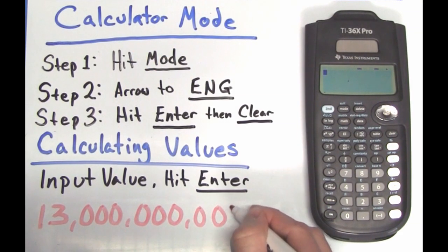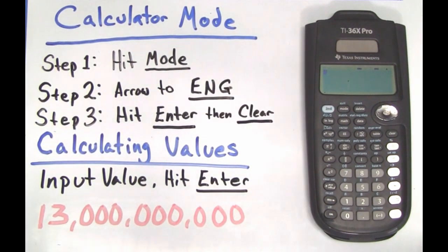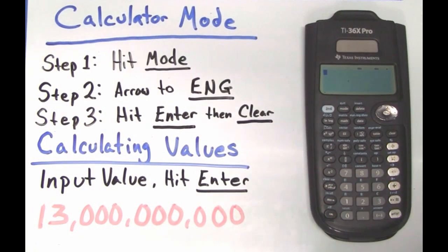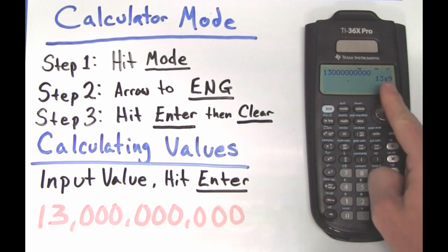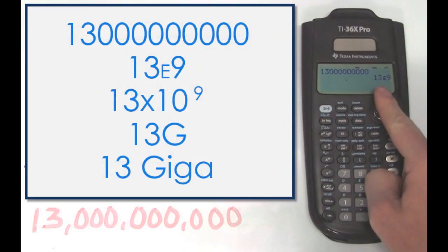Okay, last example. Let's look at a very large number to calculate into engineering notation. 13 billion. When entered into the calculator, we get 13e positive 9. That's 13 times 10 to the positive 9th, which uses the metric prefix capital G or 13 giga.